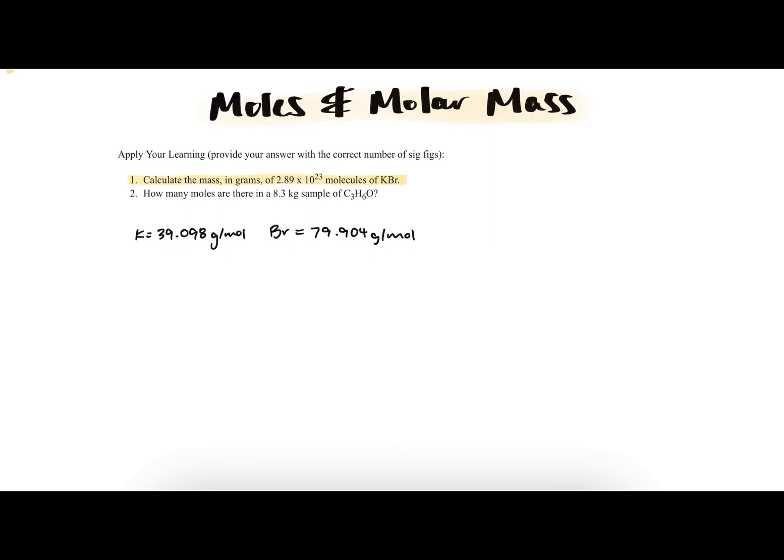So how do we even know before we begin how much mass one unit of KBr has, or potassium bromide? Well, looking at the periodic table, we see that the molar mass of potassium is 39.098 grams per mole, and the molar mass of bromine is 79.904 grams per mole.